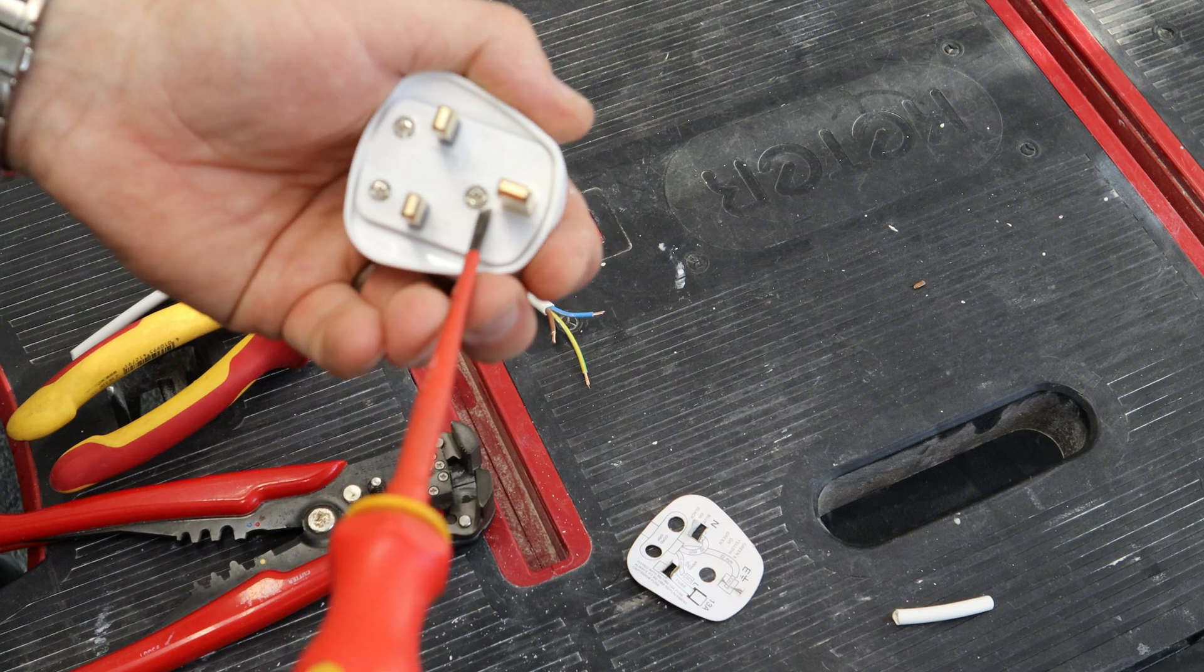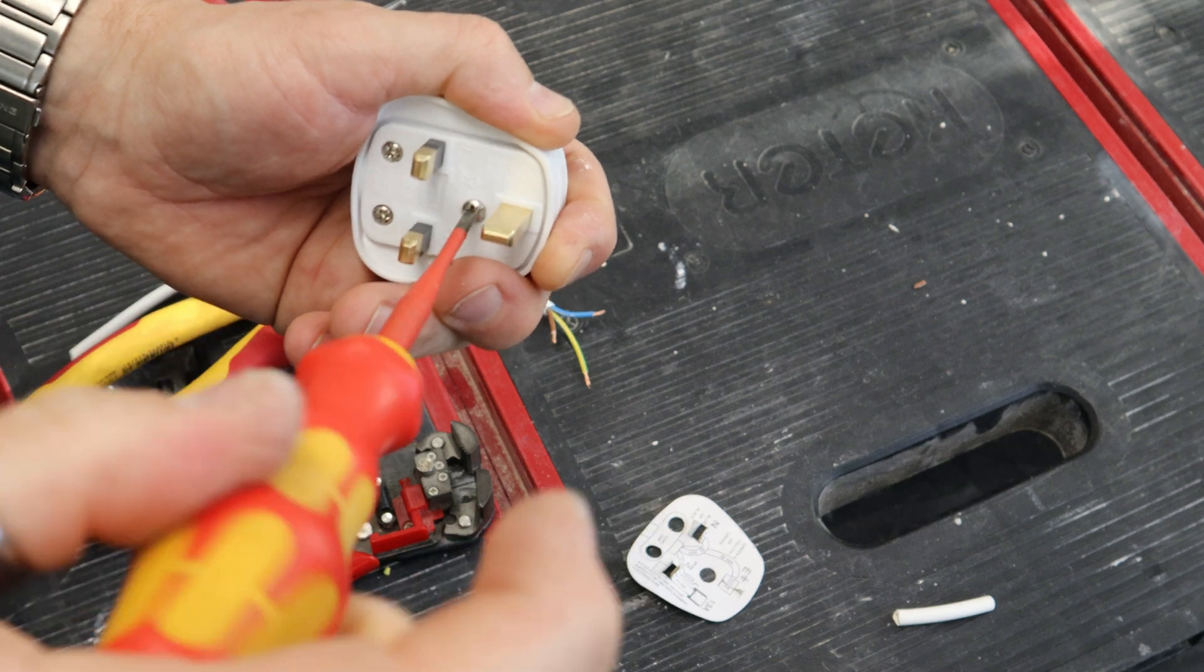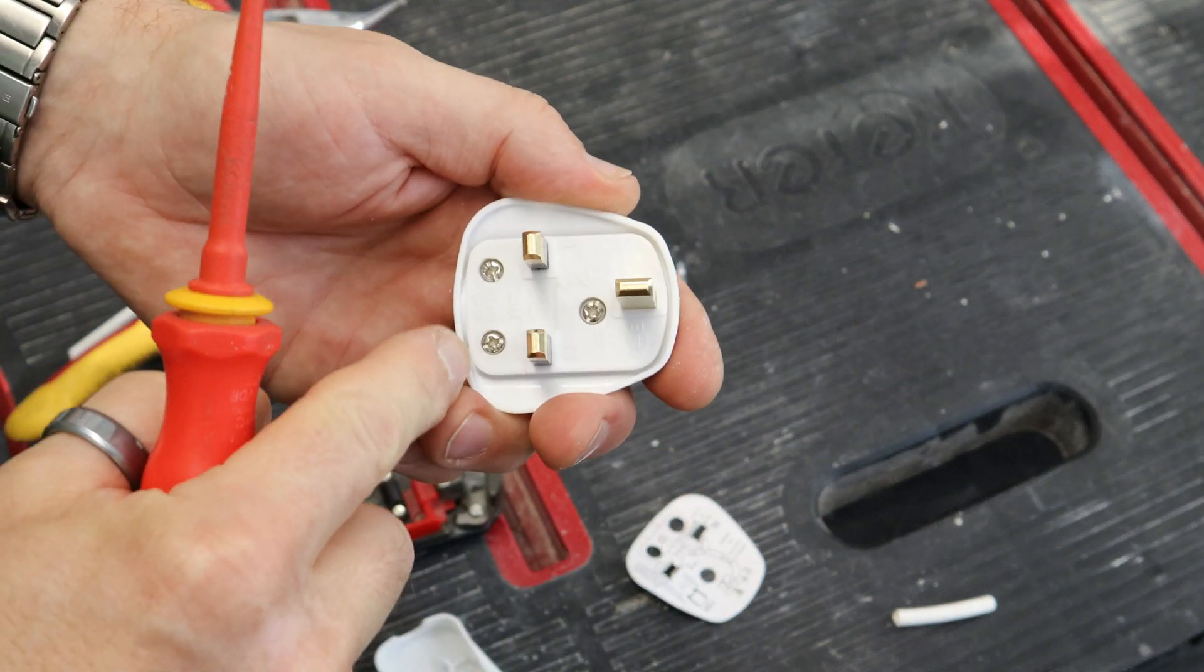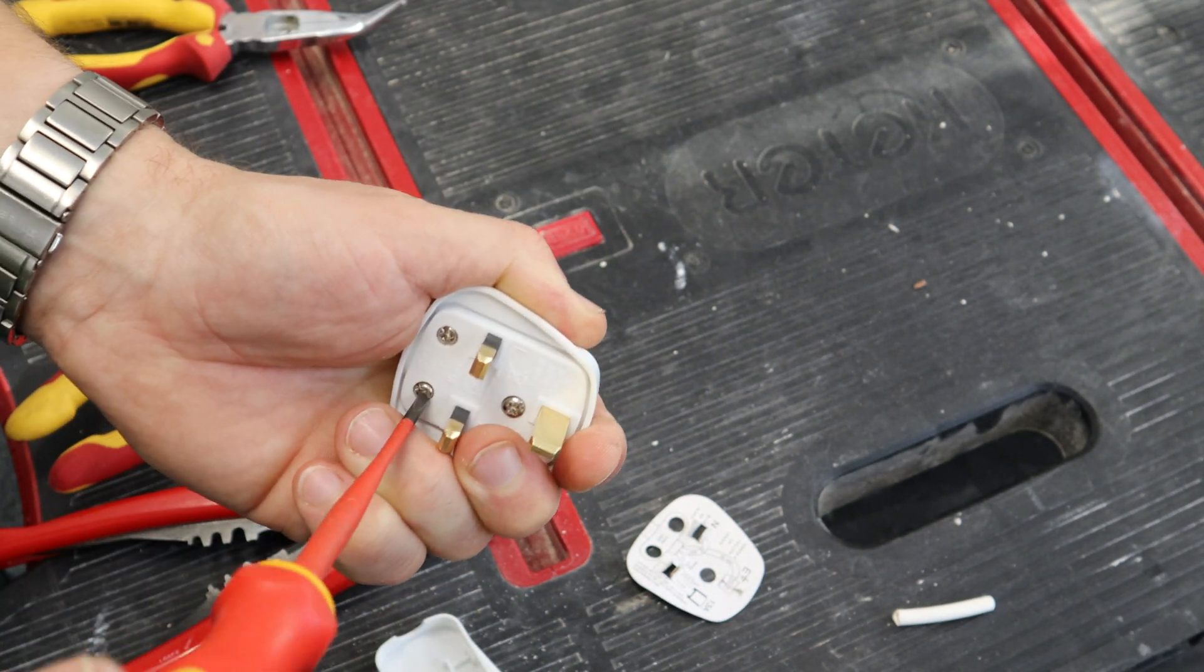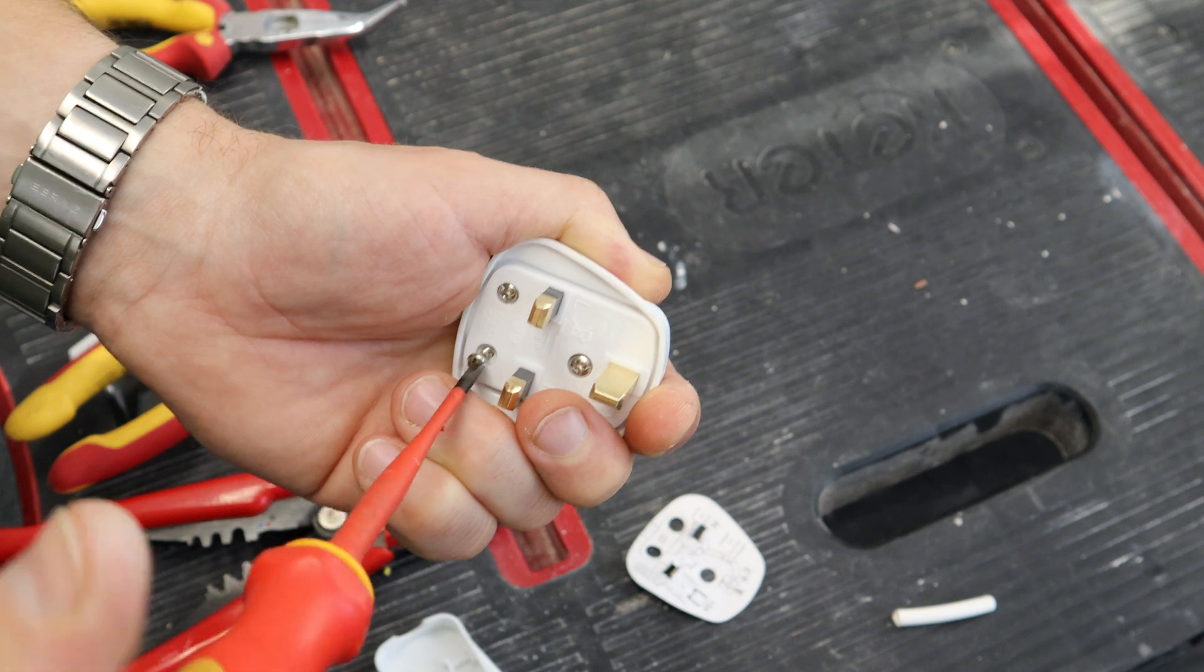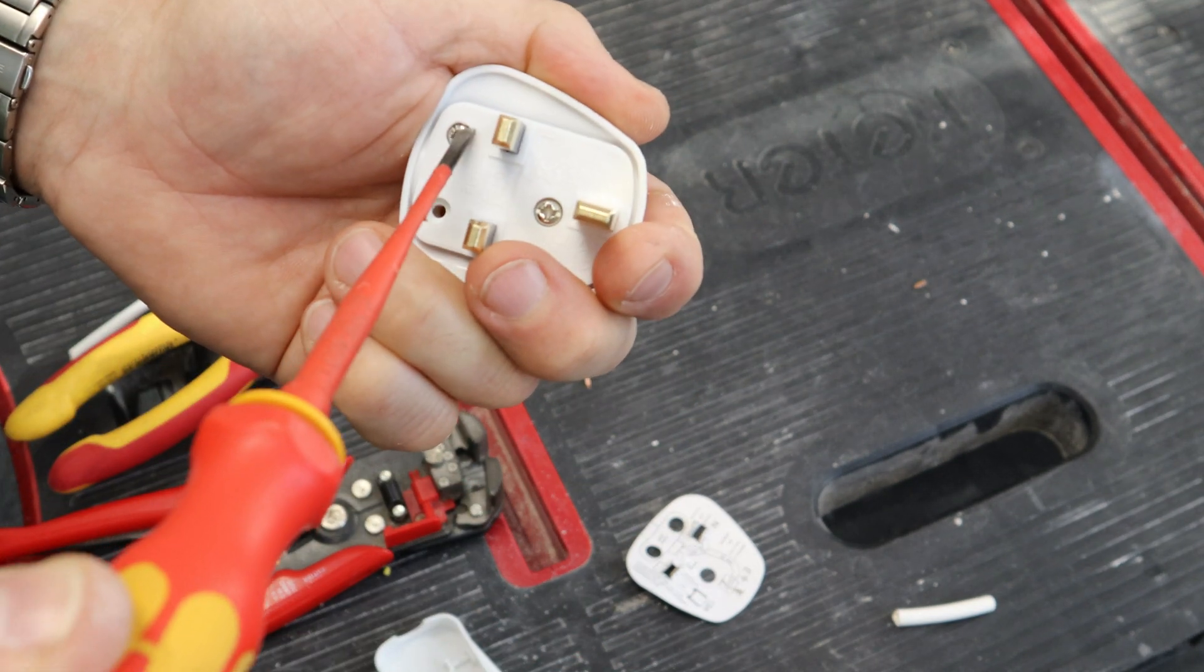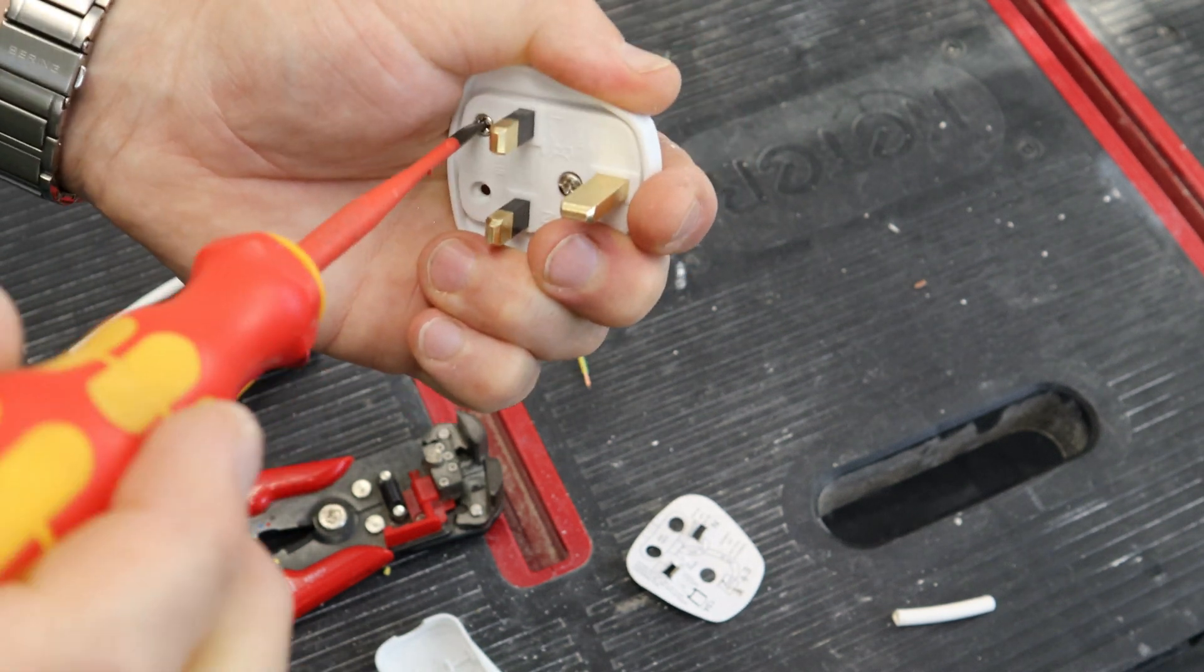So just open up the plug. Obviously you can use a flip screwdriver for this, I'm just being lazy, because a flathead will do all of it. I also release the screws for the cable clamp. I generally take one of these out all together, and then just loosen off the other one, just enough so that I can move it out of the way.